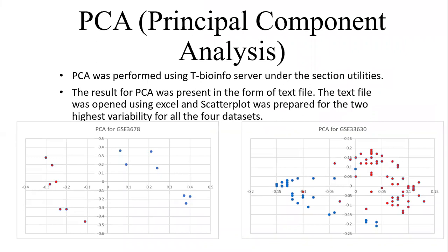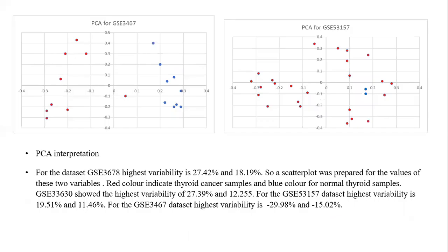Principal component analysis is a process of computing the principal components and using them to change the basis of the data, often simply using the first few and disregarding the rest. PCA was performed for each of the four datasets individually using the TBtools M4 server under the section utilities. The result for PCA was present in the form of a text file, which was opened using Excel. Scatterplots for the two highest variability components for all four datasets were prepared.